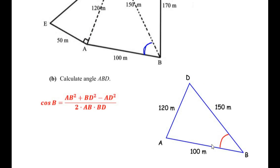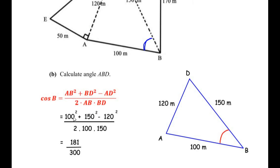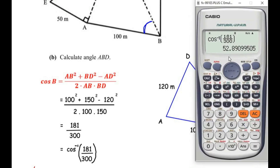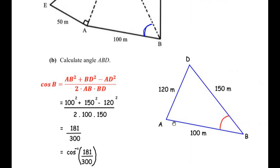Substituting the respective values: 100 squared plus 150 squared minus 120 squared, over 2 times 100 times 150. Solving this gives 181 over 300. To find angle B we take the inverse cosine: angle ABD equals cos inverse of 181 over 300, which gives us 52.89 degrees.